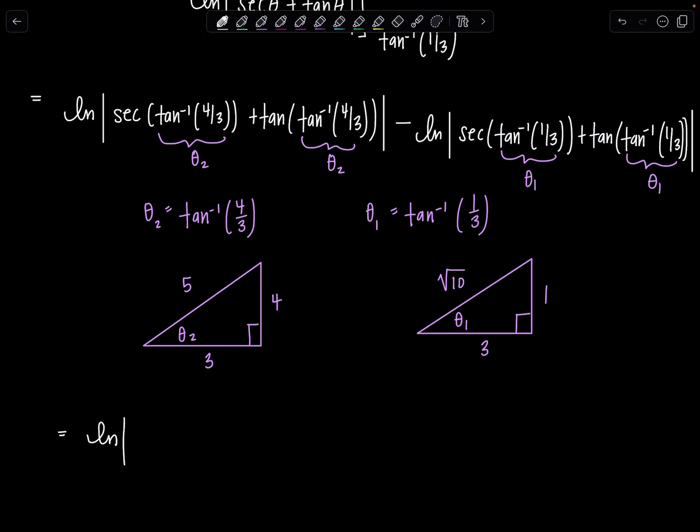So we have natural log, absolute value. What this is saying is find secant of theta 2 because tan inverse of 4 thirds is just this angle theta 2. Secant is ratio of hypotenuse over adjacent, so that would be 5 thirds. Plus, this one we really have no work to do because tangent of tan inverse of 4 thirds, I'm just going to get back 4 thirds again. That's nice. Okay, great. Minus natural log, absolute value. Now we need secant of theta 1. Secant again, ratio of hypotenuse over adjacent, so that's rad 10 over 3. Plus, last one is going to give us 1 third again.